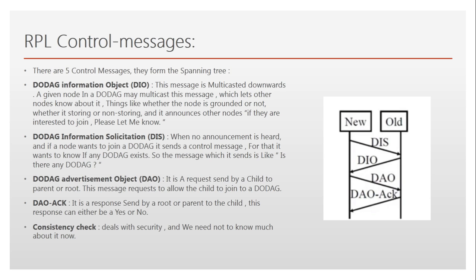So what is a DODAG Information Object? It's a message sent by a node which is already present in the DODAG, and it is multicast from this node — whether it's a root or whatever role it plays. This message contains information like whether the DODAG is storing or non-storing, floating or grounded, and it makes an offer to other nodes that want to be part of this DODAG.